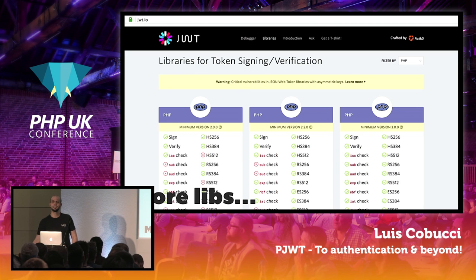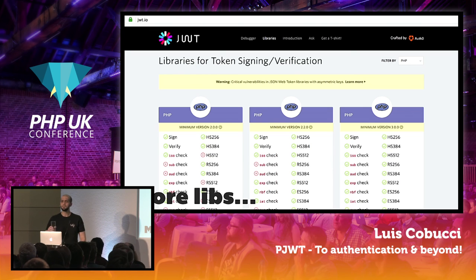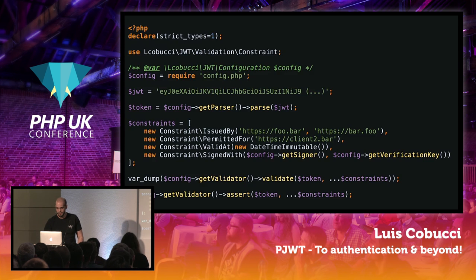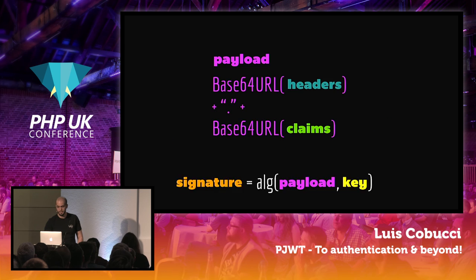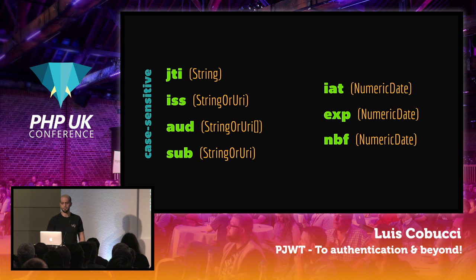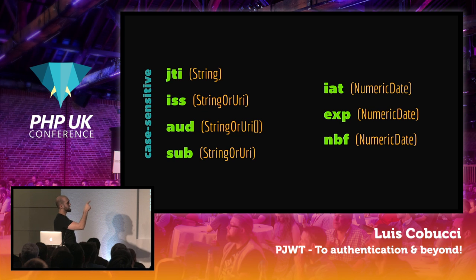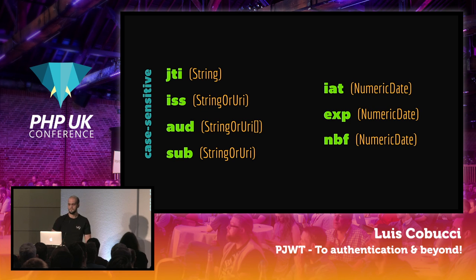What's the significance of the three-letter acronyms — like sub, aud, iat, exp? The idea was to have a compact representation. So: JTI is JSON Token ID, iss is issuer, aud is audience, sub is subject, iat is issued at, exp is expires, and nbf is not before.